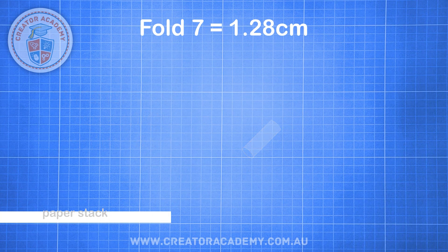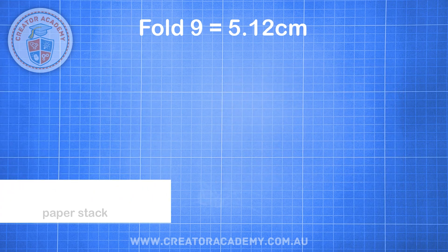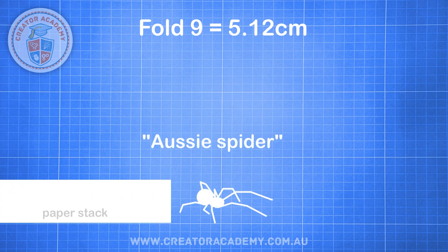Fold 7 is also the maximum number of times you can fold an A4 piece of paper — pause the video and give it a try yourself! Our paper doubles in size to 2.5 centimetres with fold 8, or about 1 inch for my American friends, which is about the thickness of the world's largest pancake. The next fold brings our oversized piece of paper to a stack over 5 centimetres in height.